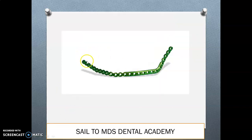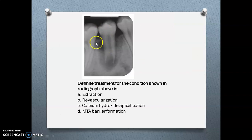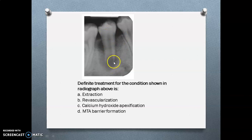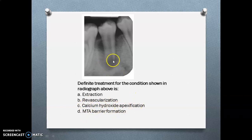Now, the definitive treatment for the condition shown in the radiograph: the radiograph shows a premolar with an open apex — a blunderbuss canal — with severe bone loss surrounding the root. Extraction is not indicated since we want to save the tooth. The options are revascularization, calcium hydroxide apexification, and MTA barrier formation. Calcium hydroxide is not feasible for a blunderbuss canal. When both revascularization and MTA barrier are options, revascularization is the most appropriate choice; MTA barrier formation is the fallback.